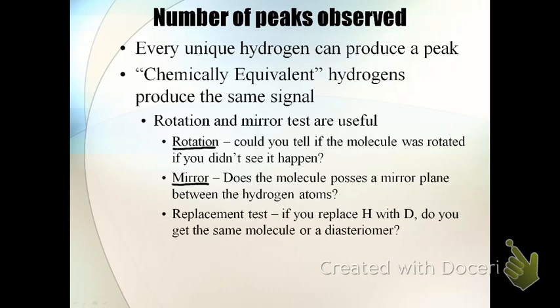The last test is called a replacement test. In a replacement test, you take one hydrogen and replace it with deuterium or another group that's not already on that atom. Then you see if replacing one hydrogen versus another hydrogen in the group gives different results, such as producing the same molecule or a diastereomer.